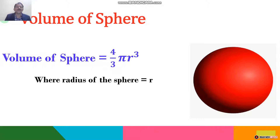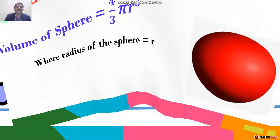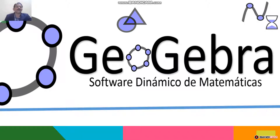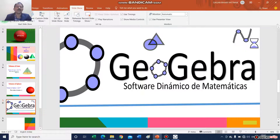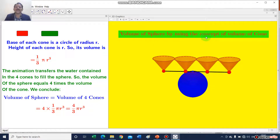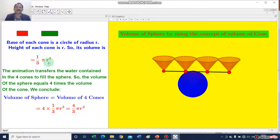Using these concepts we will find out the volume of the sphere using GeoGebra. Now I will use GeoGebra and I will find out the volume of the sphere. Volume of the sphere I will find out by using the concept of volume of the cone. I have taken here 4 cones and a sphere. The base of each cone is a circle of radius r, and the height of each cone is also equal to r. So, its volume is equal to 1 by 3 pi r cube.